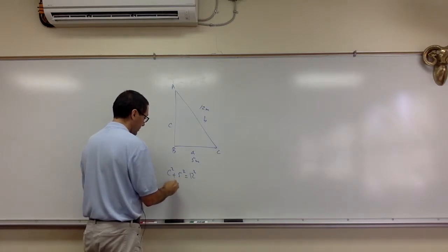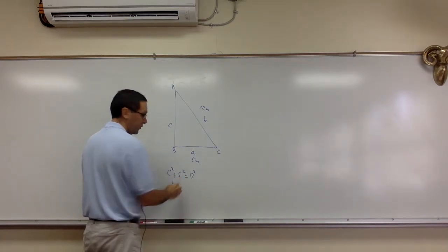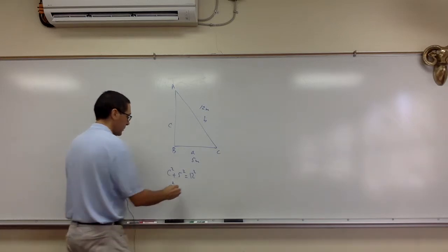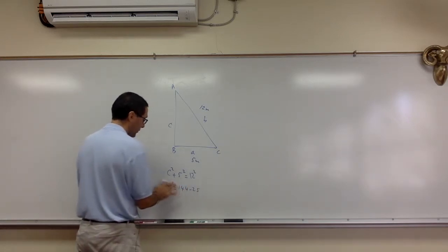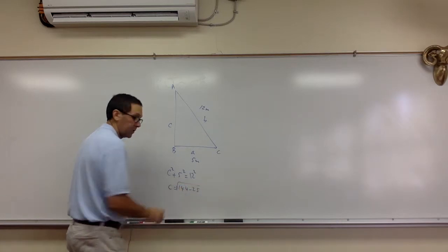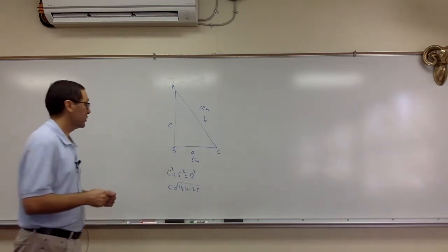So now this is going to be C squared equals 144 minus 25. Then when you finish, you take the square root of whatever you get here. So that's pretty straightforward.